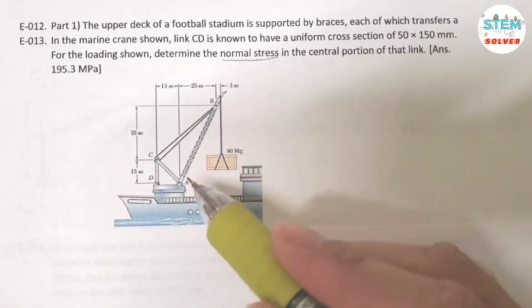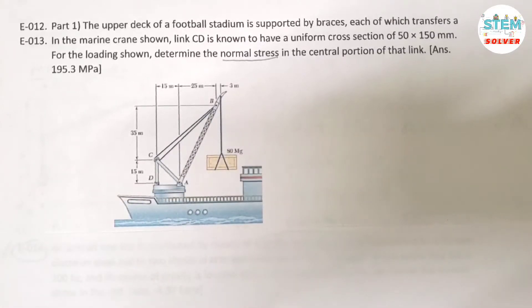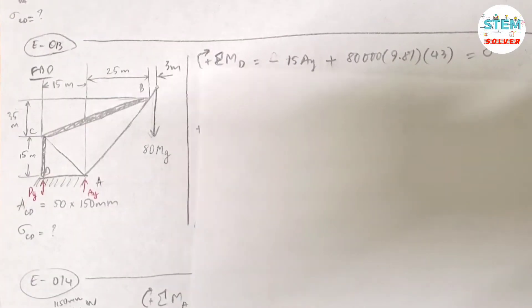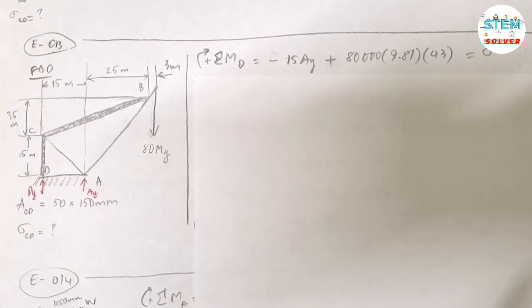So I'm going to translate it into a free body diagram. Then I'm going to have something like this. So I have the crane and frame here.